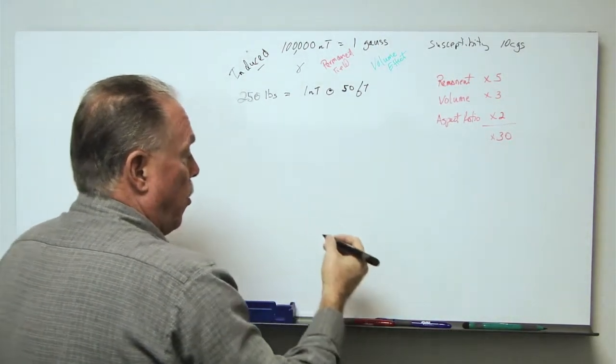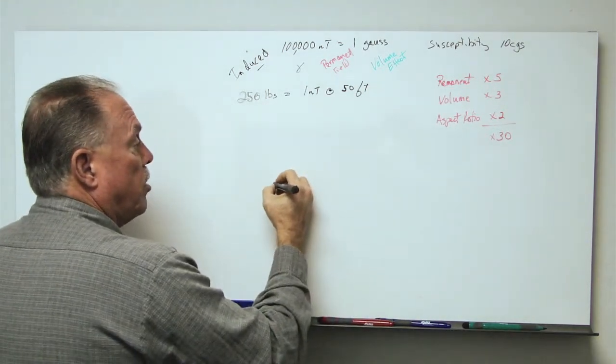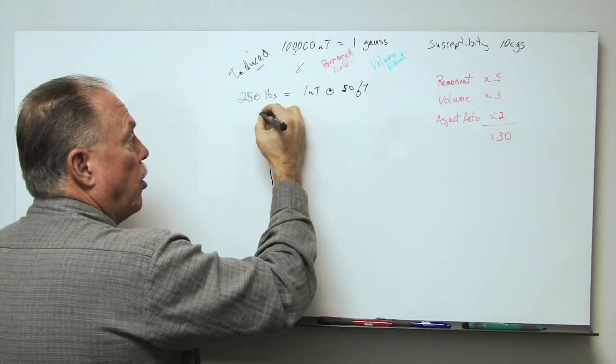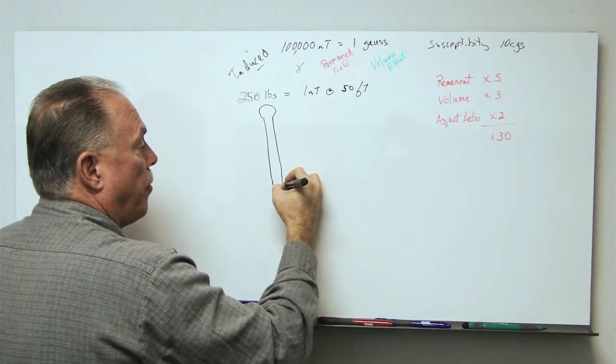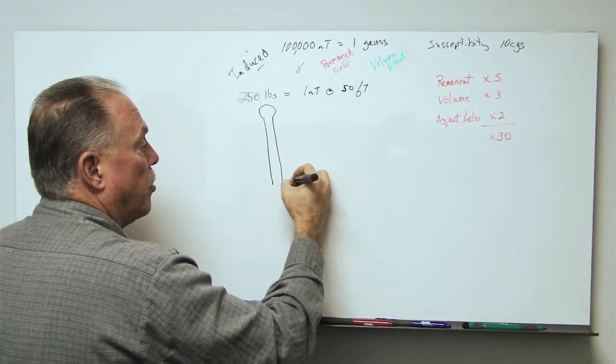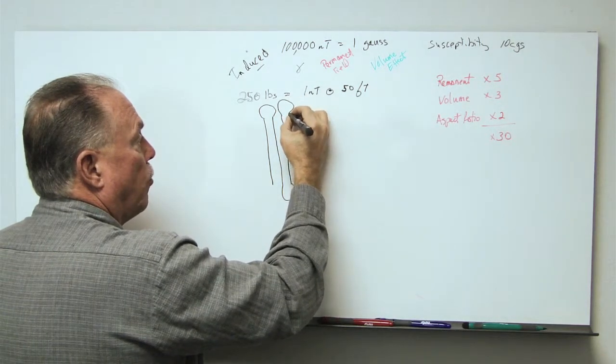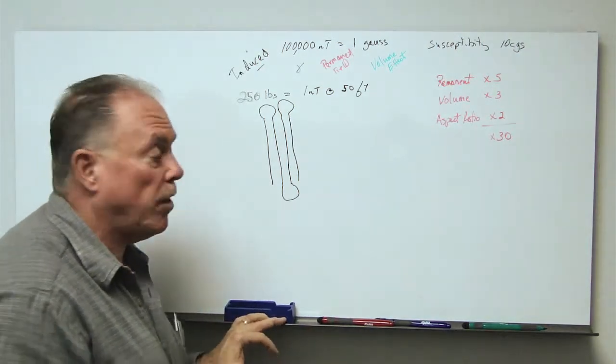In general, we do a survey grid which means that we are going one direction, turning around, and coming back. I'm drawing this as though it is a marine survey, but the same holds for all types of land and airborne surveys.